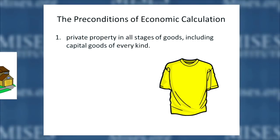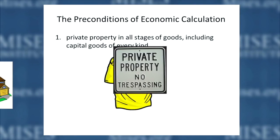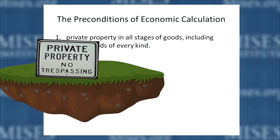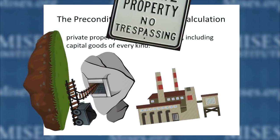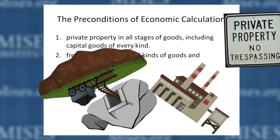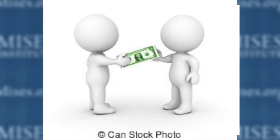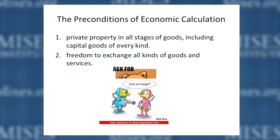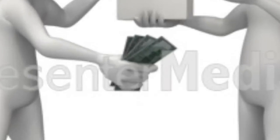So what are the preconditions of economic calculation? Mises says there has to be private property in all stages of production — including land, mines, factories, and so on. They have to be privately owned so that they can be exchanged, and they also have to be permitted to be exchanged. So there has to be private property, there has to be free exchange, and there has to be sound money.